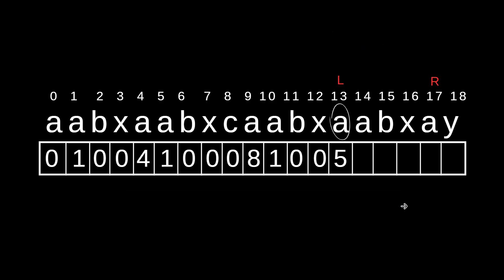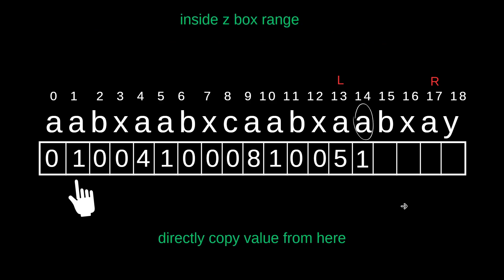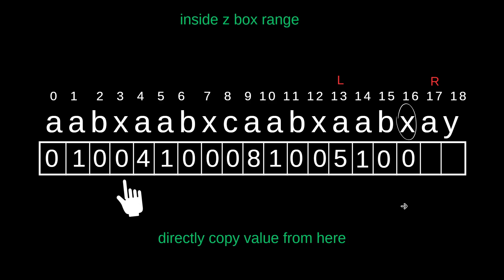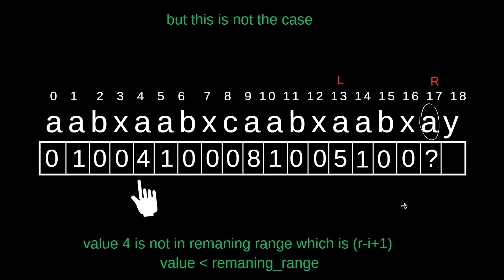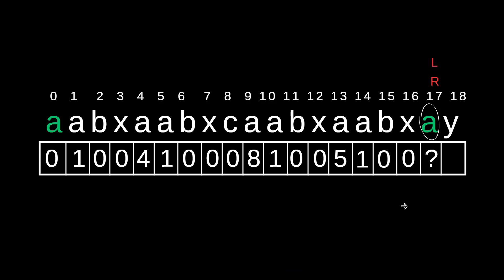This is the code. Then we jump to the next index and copy the value because it is less than the remaining range. Next, copy again — value is less than the remaining range. Then we go to value 4. Is 4 really the answer? No, because our remaining range is only 1. We are getting 4, but 4 does not make sense. The value is not less than the remaining range — R minus i plus 1 equals 1. So value should be less than 1, which is not the case. So we reinitialize our Z box: L and R will point to ith position.